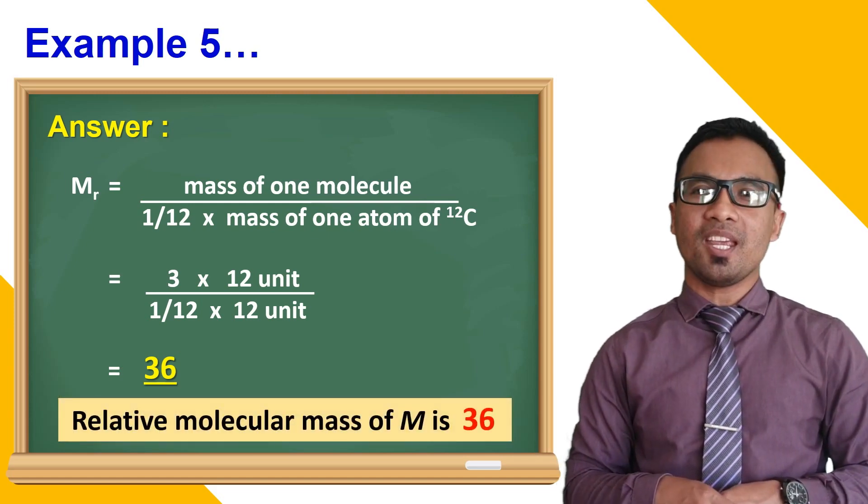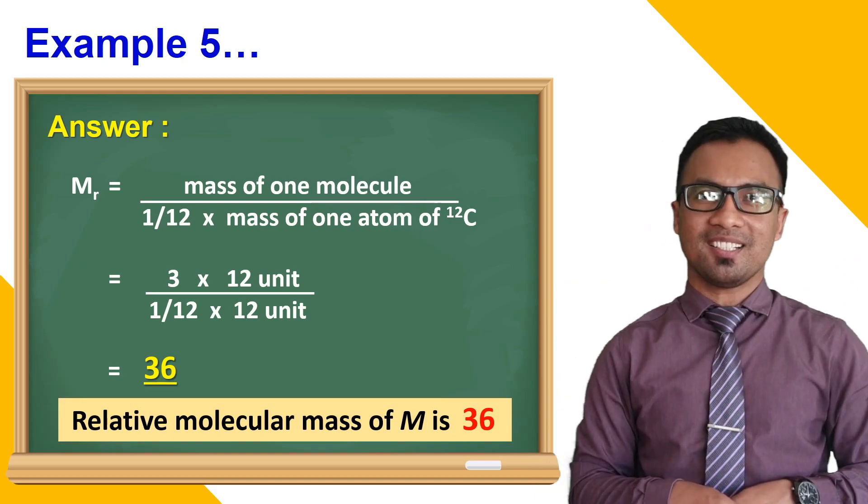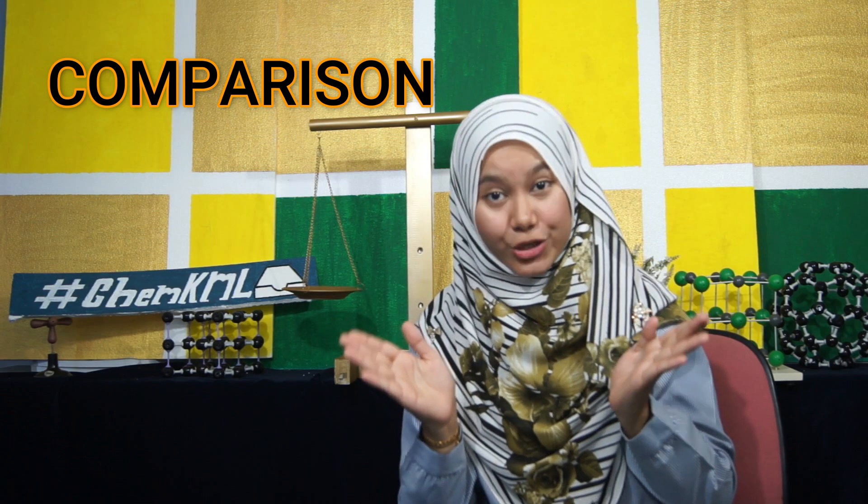That's all from me. Back to you Ms. Faya. Thank you, Mr. Nizam for the awesome examples. Bear in mind, the relative atomic mass and relative molecular mass are not the exact mass of an element or substance. They are comparisons to a standard unit. That is, 1/12 of the carbon-12. Hence, they have no units.